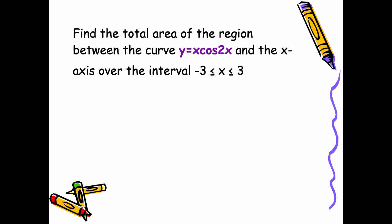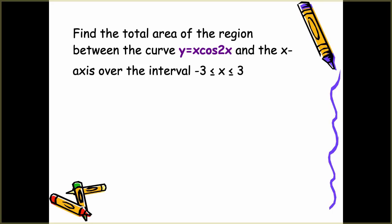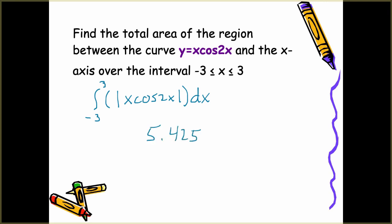As an example, try plugging this into your calculator: the integral from negative 3 to 3 of the absolute value of x cosine(x) dx. For the newer calculators, you'd have negative 3 to 3, absolute value bars around x cosine(x), then dx. You should get back 5.425. That is how you use your calculator to find numerical integration when looking for total area and not net area — total area requires the absolute value inside the integral.